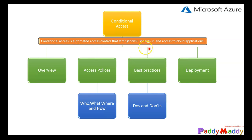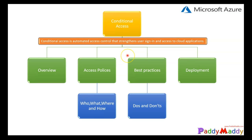Conditional access allows you to implement automated access control decisions for accessing your cloud apps based on conditions that you set up. You need to remember that users will still have to use a username and password to log in to Azure resources, because conditional access is not the first factor authentication method. It means post entering the username and password, you are setting conditions to grant access based on location or risk factors.